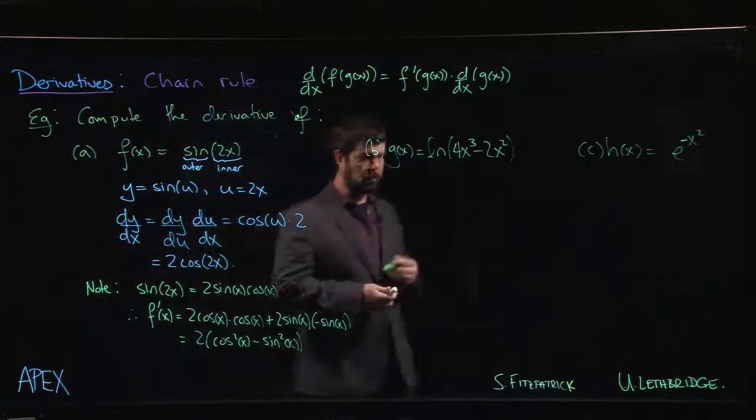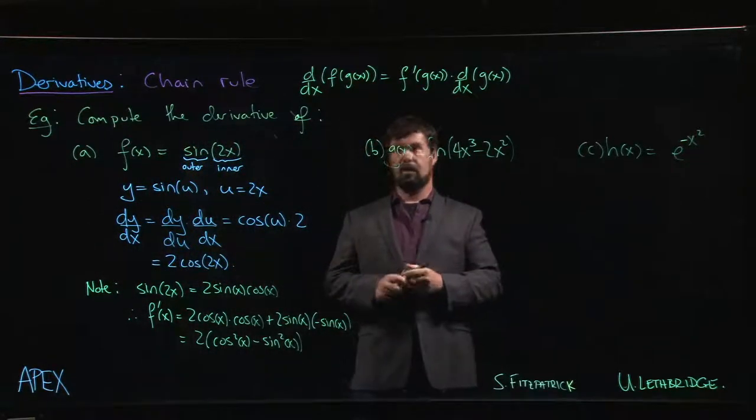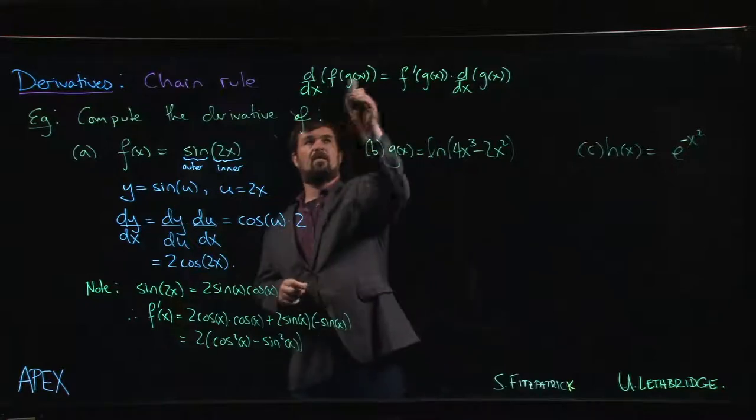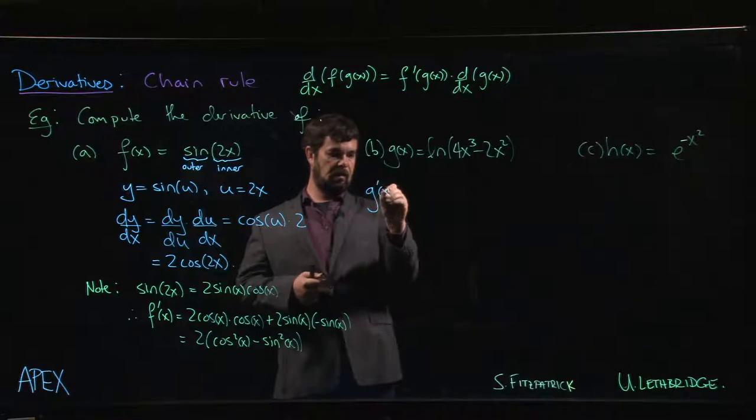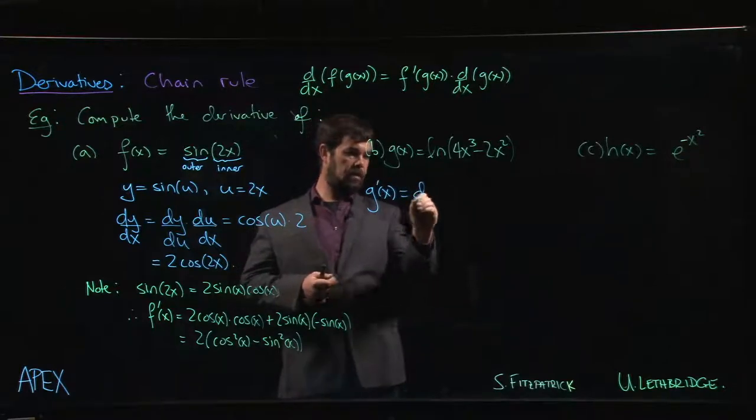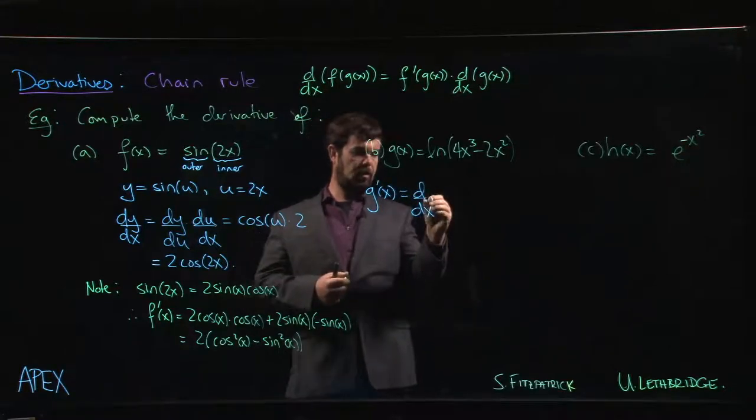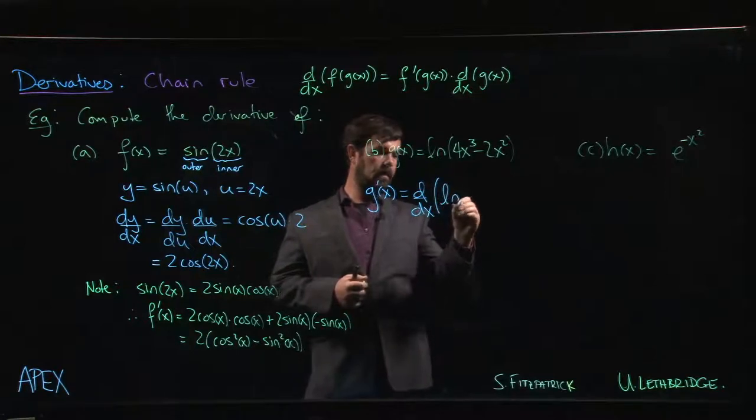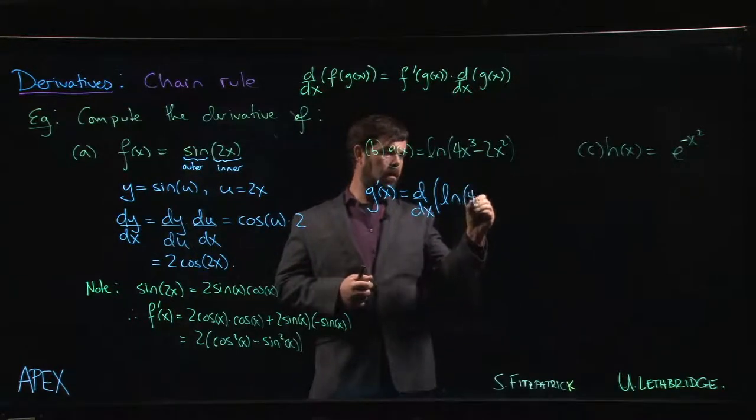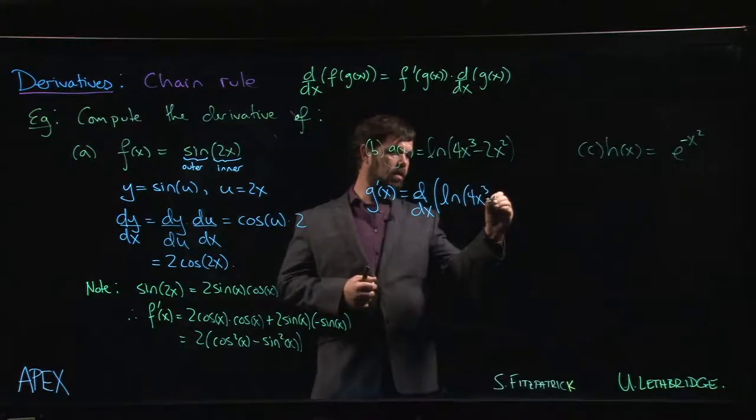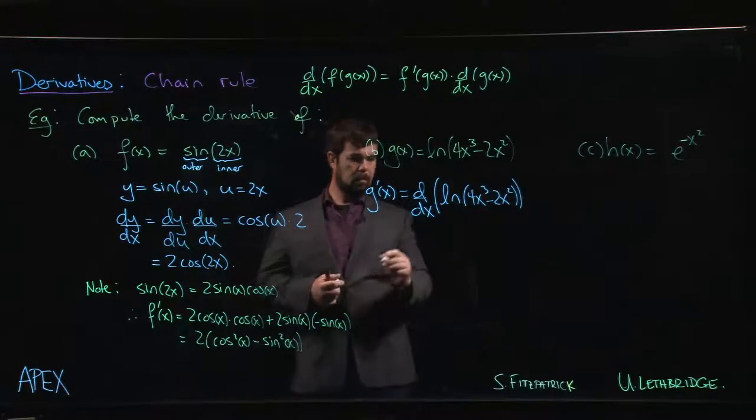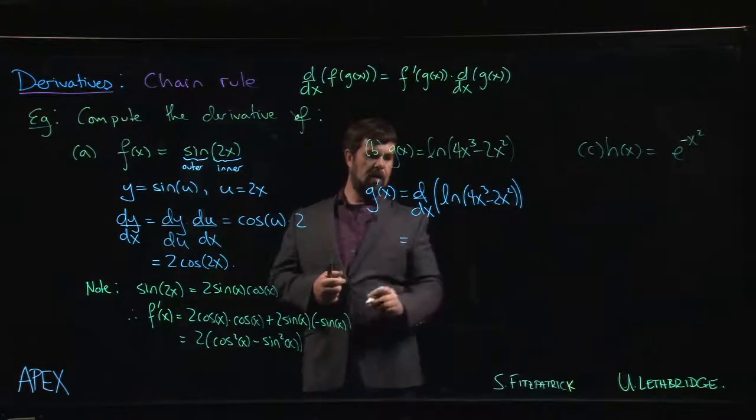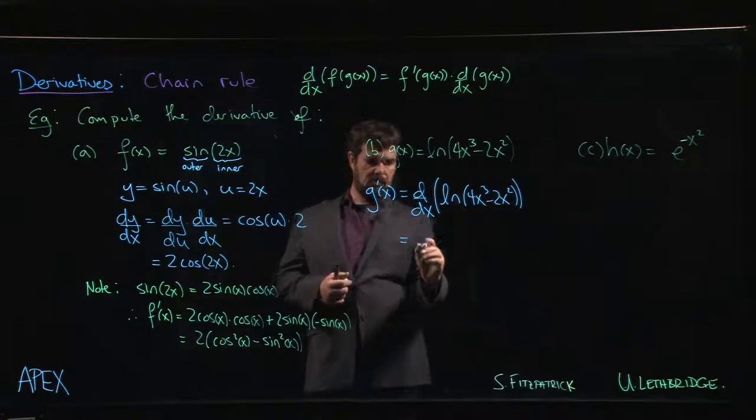Okay, so let's try this one. This time, I'm going to try to use this method here. So we might say that g prime of x is the derivative with respect to x of the natural log of 4x cubed minus 2x squared. Okay, so the first thing we do is we take the derivative of the natural log.